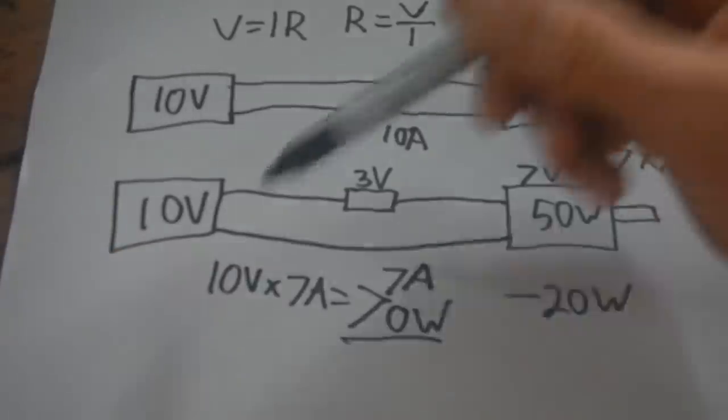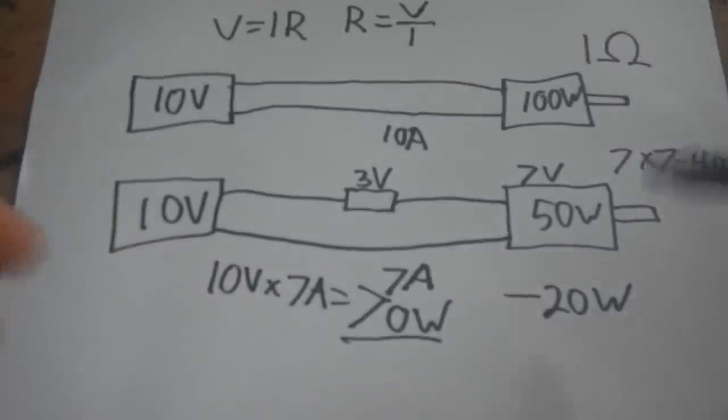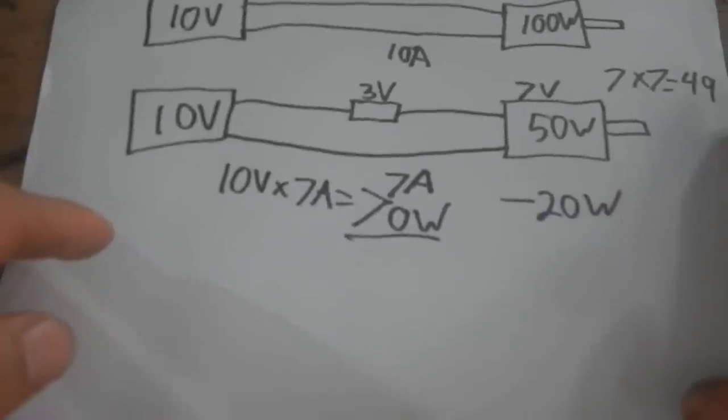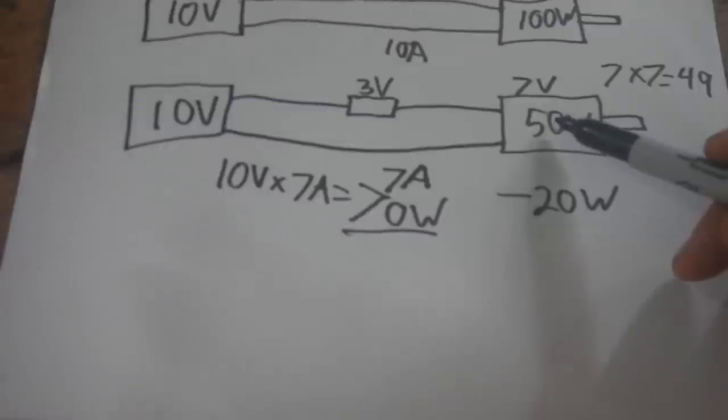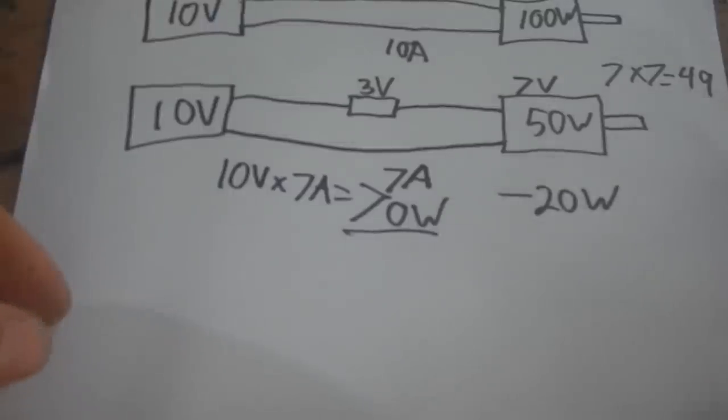That means we're wasting 20 watts—we're not wasting 50 watts, we're only wasting 20. Well, it ends up being like 21 or whatever, but these are just rough numbers to give you a rough idea. Technically this would be 49 watts and you'd be wasting 21. This is a lot better than wasting 50 watts.